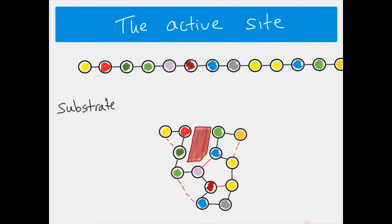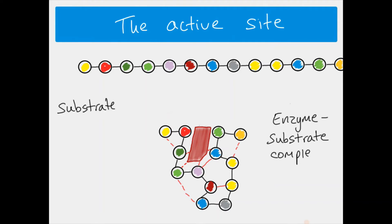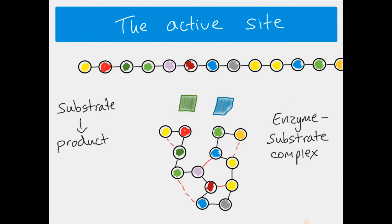For our substrate that is complementary in shape, when it binds into the active site, temporary hydrogen bonds form which hold it in place and make it stable so the reaction can take place. This is called an enzyme-substrate complex. The reaction takes place and the substrate is turned into products — in this case one substrate is broken down into two products. The hydrogen bonds break, the products are released, and the enzyme and active site are unchanged, which is why enzymes can be used over and over again.